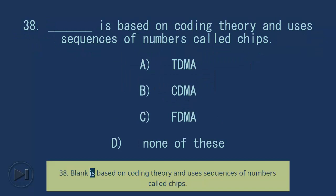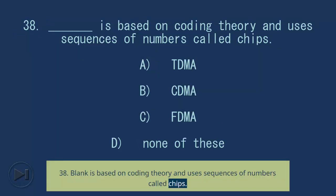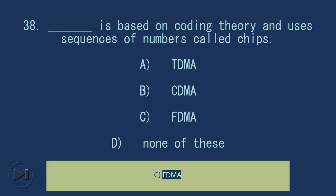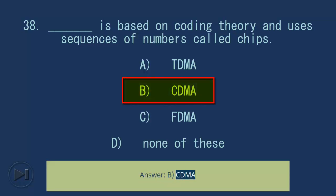Question 38: Blank is based on coding theory and uses sequences of numbers called chips. A) TDMA, B) CDMA, C) FDMA, D) None of these. Answer: B) CDMA.